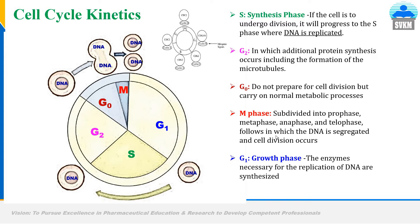In M phase, the DNA is segregated and actual cell division occurs. You can clearly see that the DNA is segregated — the replicated DNA from the S phase is being segregated here in M phase — and the actual cell division has occurred.